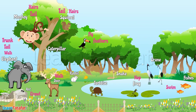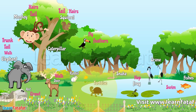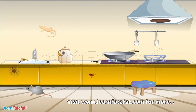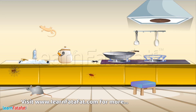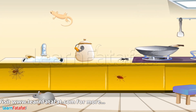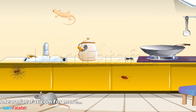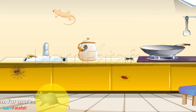Some animals can live on the ground as well as in water. Some also live in our houses as pets, whereas some animals are uninvited guests.